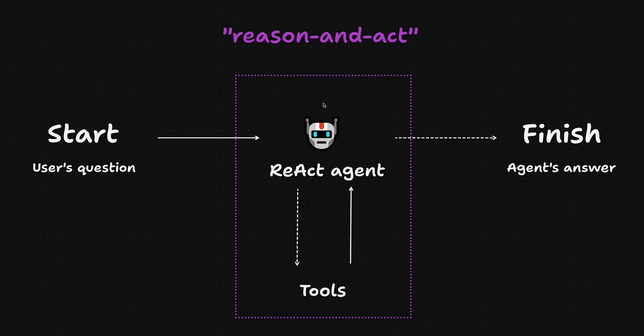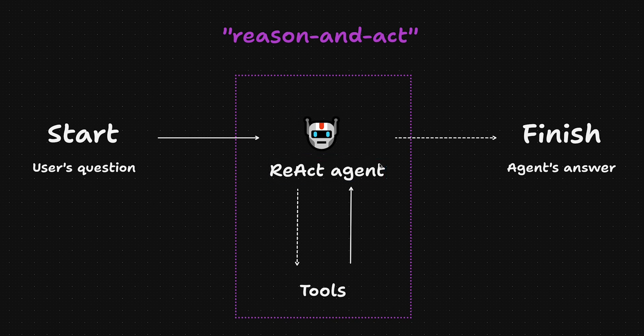Two, understanding React agents. Our LangGraph agent will be of the React type, which stands for Reason and Act. This means the agent will go through a cycle of reasoning and acting. If you want to learn more, there's a link to a scientific article in the description below. Basically, the agent will decide whether to use tools or not and will keep repeating this Reason and Act process until it finds an answer for the user.